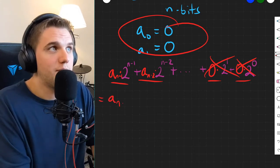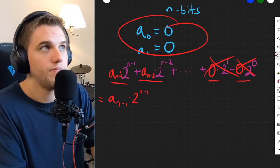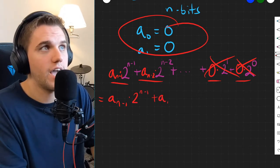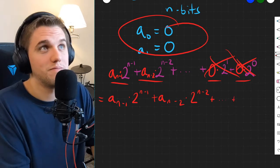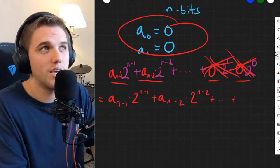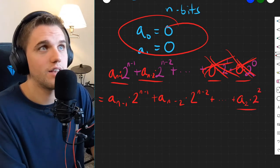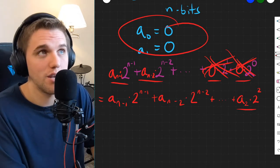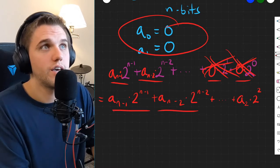And so what am I left with? I'm left with aₙ₋₁ times 2 to the n minus 1 plus aₙ₋₂ times 2 to the power of n minus 2, all the way down to what? Well, these terms are all 0, and so my last term would be a₂ times 2 squared. That would be the last term that could possibly be non-zero.